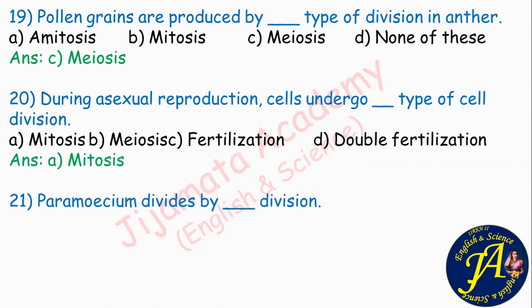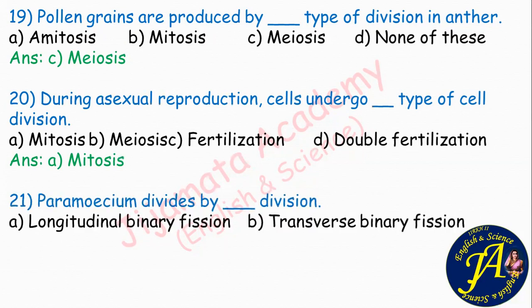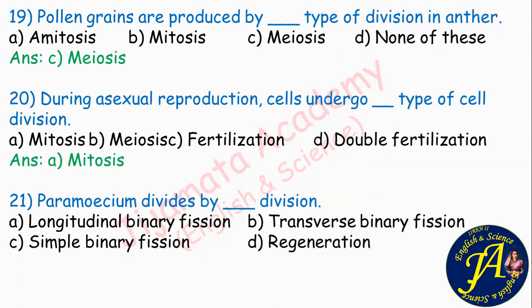Paramecium divides by dash division. Options are longitudinal binary fission, transverse binary fission, simple binary fission, regeneration. Paramecium divides by transverse binary fission. Euglena divides by longitudinal binary fission, amoeba by simple binary fission, and regeneration occurs in planaria. Option B: transverse binary fission is the correct answer.